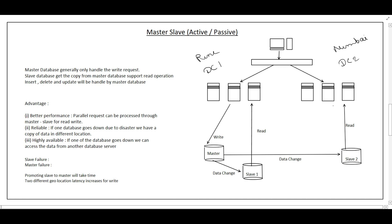If the write request comes from the Mumbai site, it gets diverted to the master in Pune, which is far away, so latency increases. The second problem is that if the master goes down, promoting a slave to master can take around two minutes. During that time, write, delete, and update requests cannot be handled, resulting in data loss until the slave is promoted.